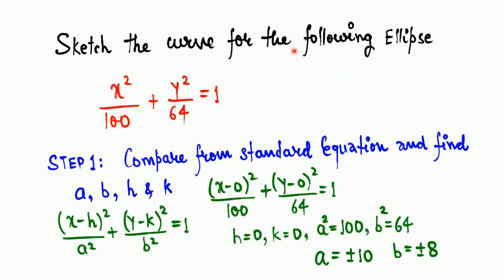Now let's sketch the curve for the following ellipse. Step 1: compare from the standard equation x²/a² + y²/b² = 1. For the given equation, h=0, k=0, a²=100, b²=64. Since these are degree-two, a = ±10 and b = ±8.